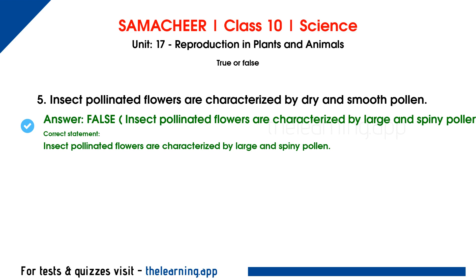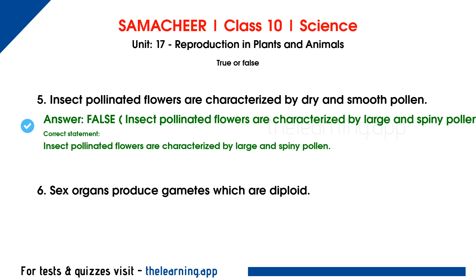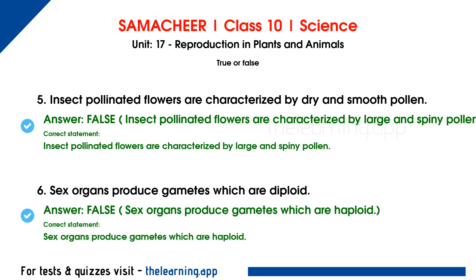Sixth question: sex organs produce gametes which are diploid. This is false. The correct statement is: sex organs produce gametes which are haploid.